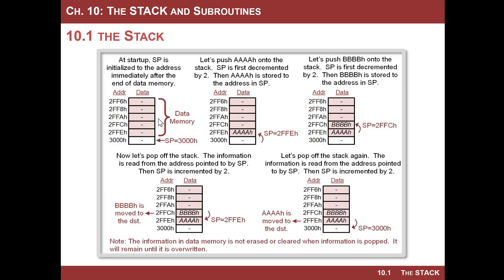Let's look at a cartoon graphic of how this works. Here's our data memory with nothing in it. We're at the very bottom of data memory, and the reason we do that is to have the most ability to dynamically allocate memory, since we define our hard-coded constants and variables at the beginning of data memory. The stack pointer is at 0x3000, which is just outside data memory. Let's do a push of 0xAAAA onto the stack. The memory map uses 16-bit words, showing only even addresses. The first address we can put information into is 0x2FFE. The process is: decrement the stack pointer by 2 to reach that address, then move the information in.